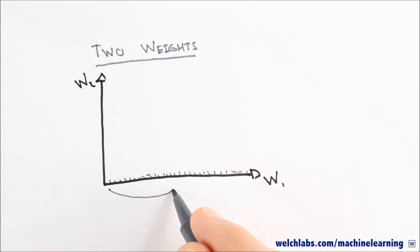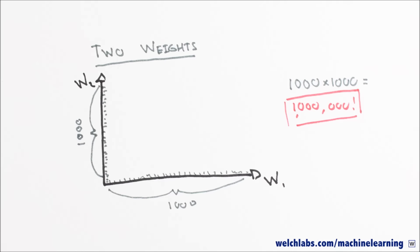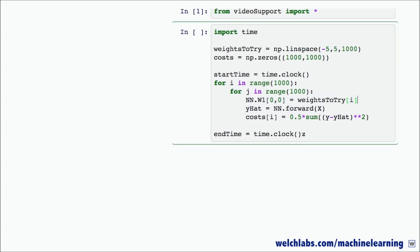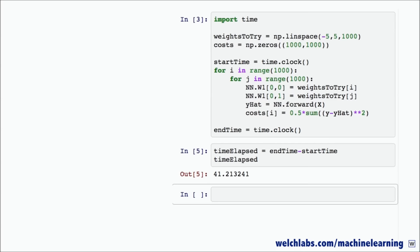Let's next consider two weights for a moment. To maintain the same precision, we now need to check 1,000 times 1,000 or a million values. This is a lot of work even for a fast computer. After our million evaluations we found our solution, but it took an agonizing 40 seconds.